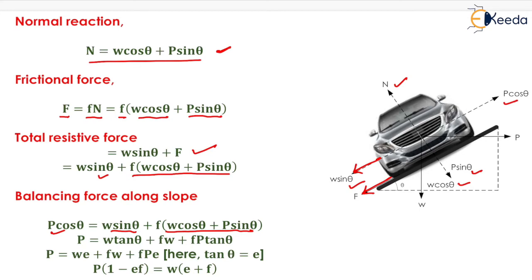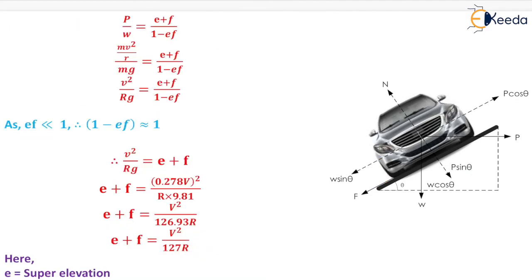Solving this gives P equals W tan theta plus fW plus fP tan theta. Since tan theta equals the super elevation e, we replace tan theta with e to get P equals W(e + f) + fPe. Rearranging: P(1 - ef) equals W(e + f), so P/W equals (e + f) upon (1 - ef).